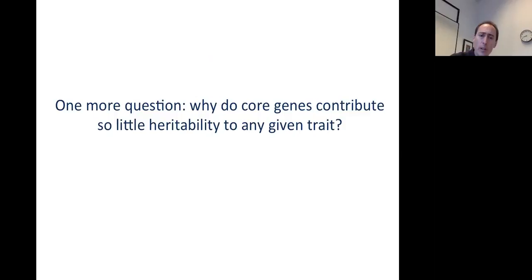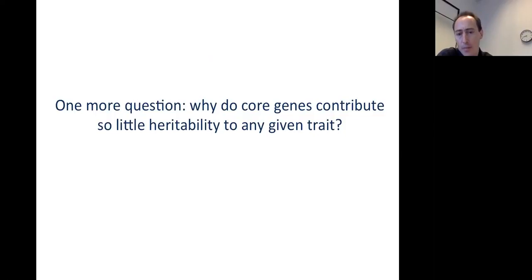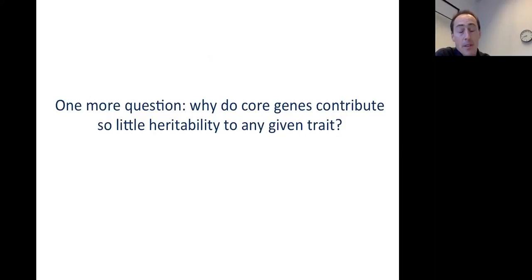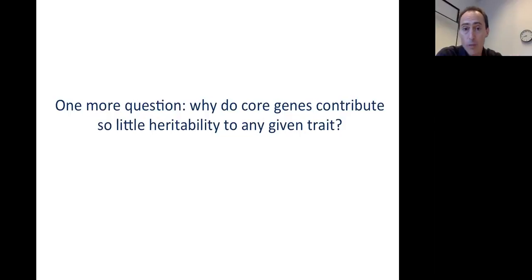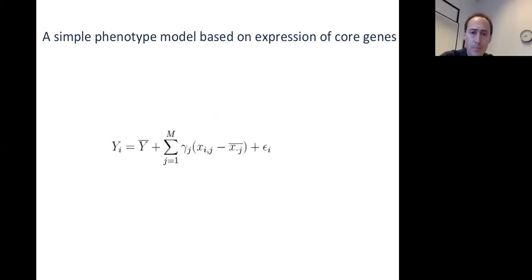There's one more key question: why do the core genes actually contribute so little heritability to any given trait? For schizophrenia, the first 108 genome-wide significant loci contribute only about 10% of the explained variance in risk. If we imagine that many of the core genes may be among that set of 108, it becomes clear that the core genes themselves are contributing only quite a small fraction of heritability. To get at this, we started doing some mathematical modeling.